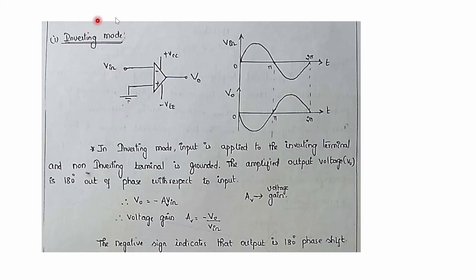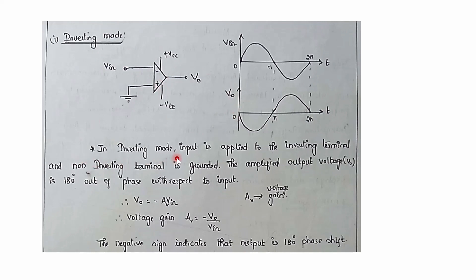Inverting mode is one of the single-ended modes. Input is applied to the inverting terminal and the non-inverting terminal is grounded. Input is considered as Vin and the output voltage is considered as VO. Since the input is applied to the inverting terminal, output will have a 180-degree phase shift — the output is out of phase. Looking at the waveforms, for one full cycle 0 to 2π with positive and negative half cycles: for the positive half cycle the output is negative, and for the negative half cycle we get a positive output. This produces a 180-degree phase shift.